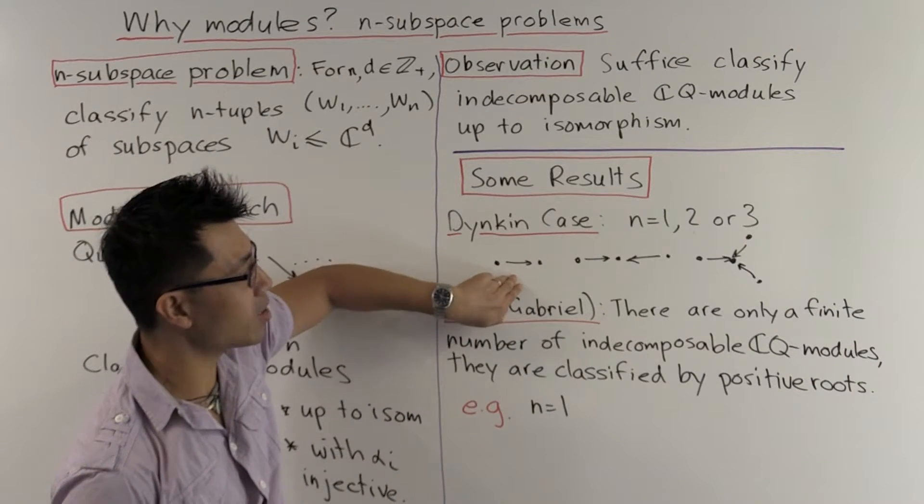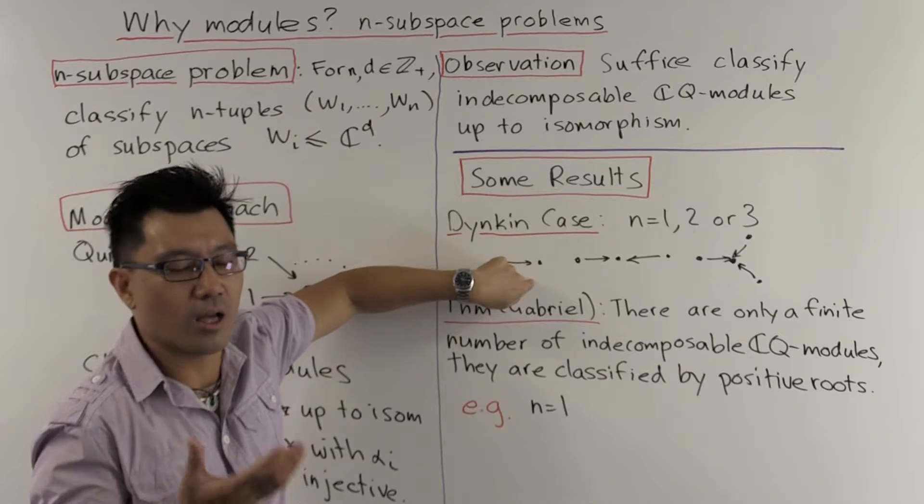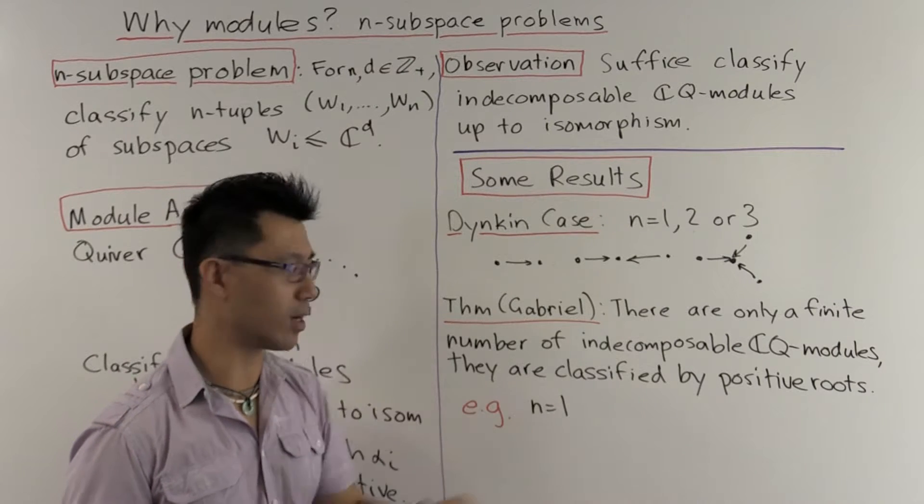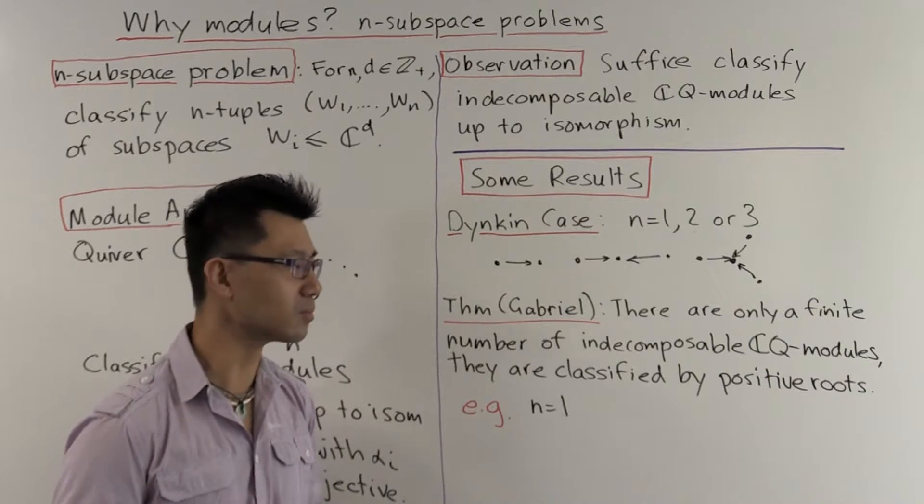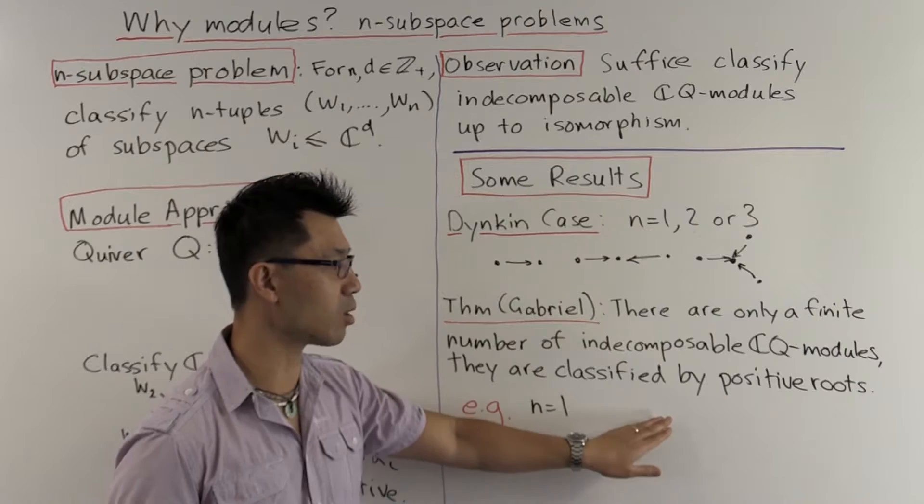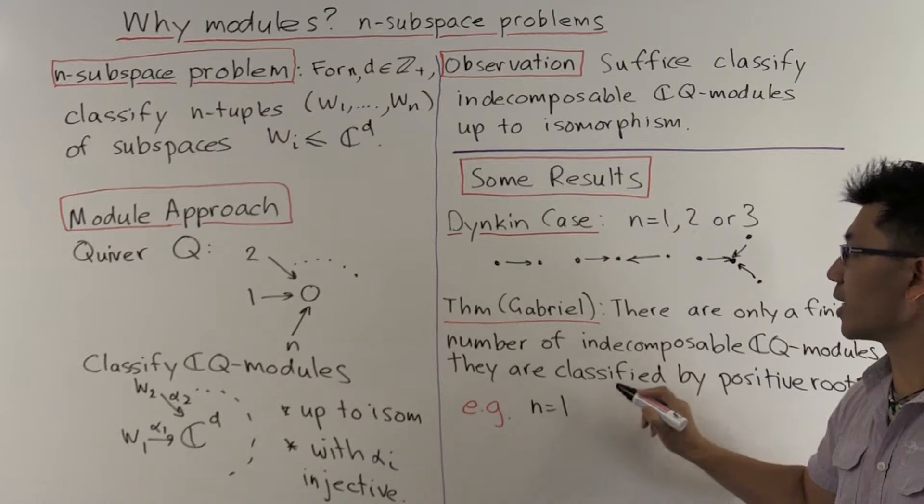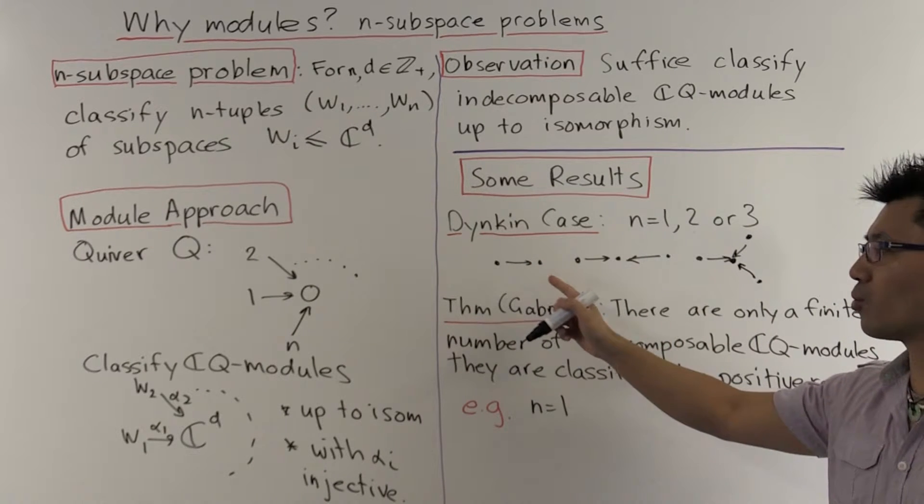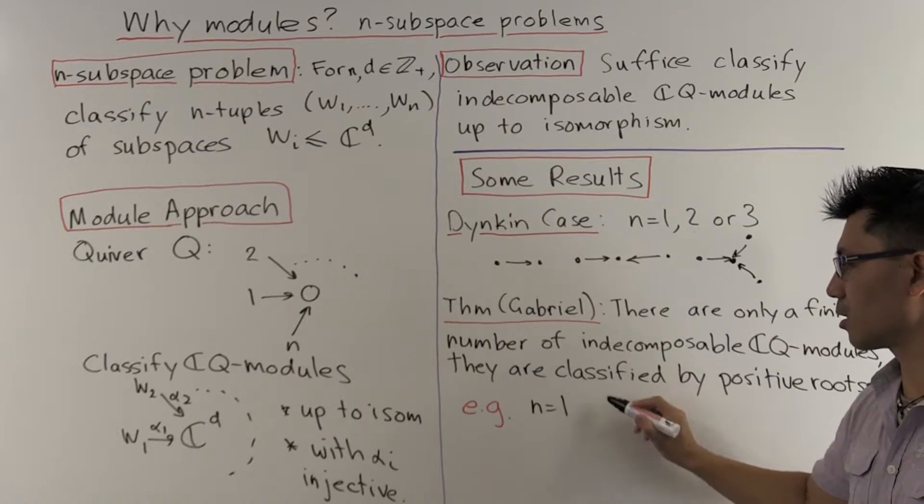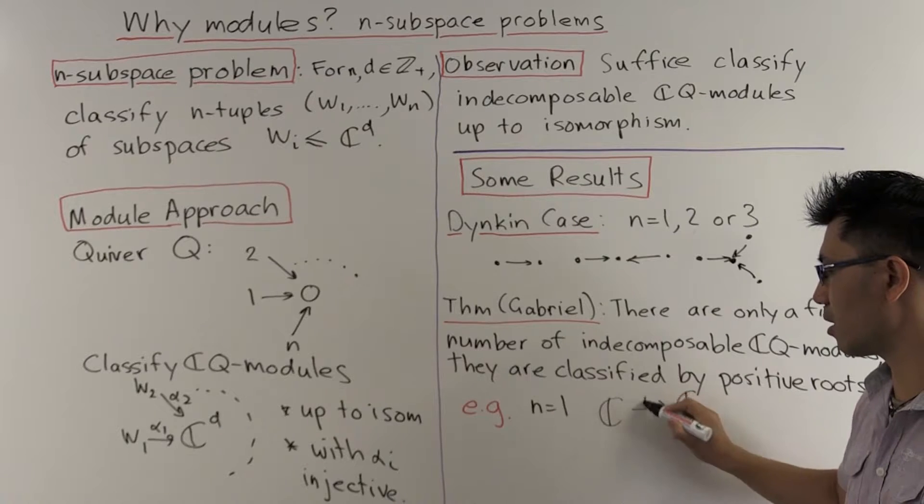If you don't know about Lie theory and Dynkin diagrams, I can tell you very simply what happens in the case n equals 1. In the case n equals 1, you're just looking at one linear map. And so, of course, you can just study this using the usual linear algebra, but it takes a rather interesting form when you do it this way. In this case, it turns out that there are three positive roots, so there'll be three indecomposable modules. Remember to get a module, we need to give a vector space for each of the vertices and a linear map between them.